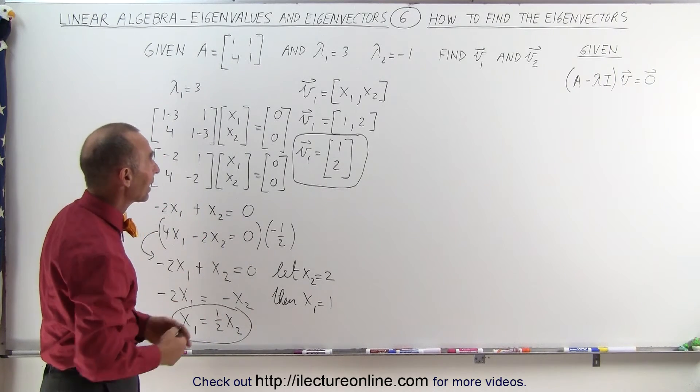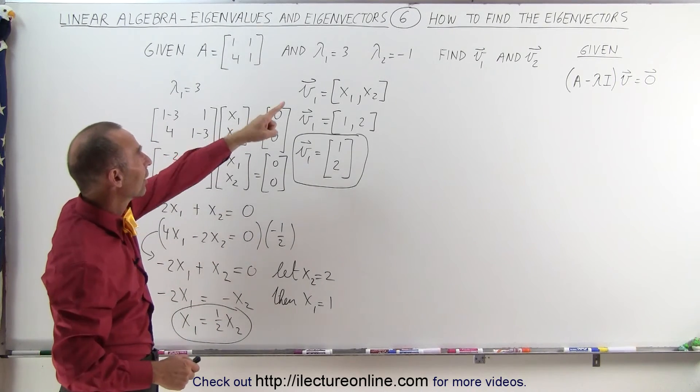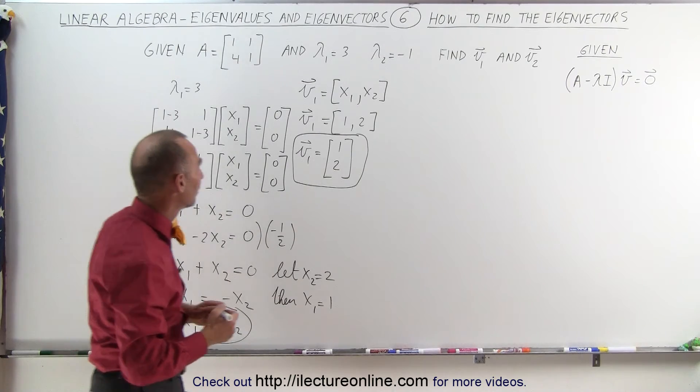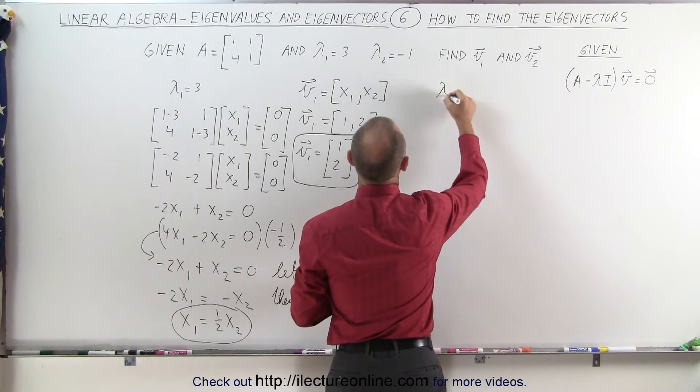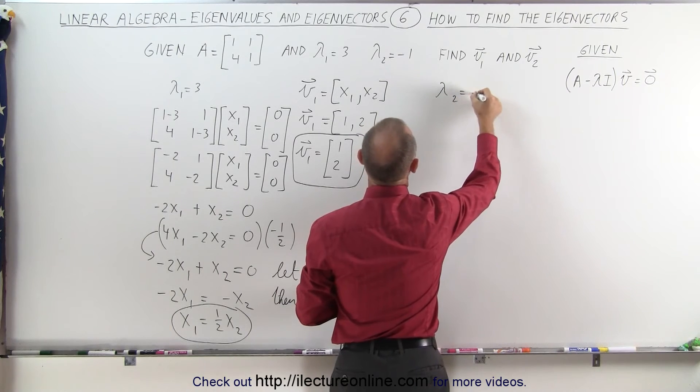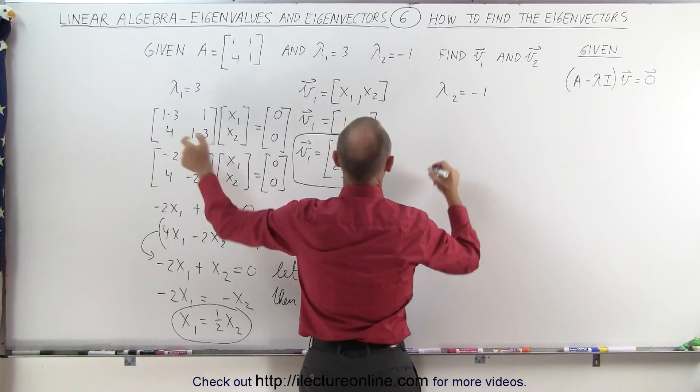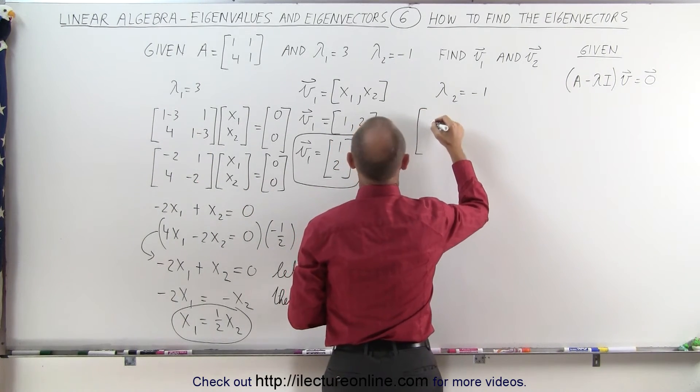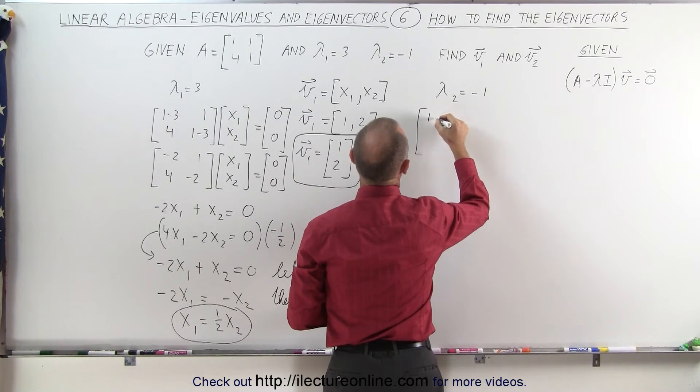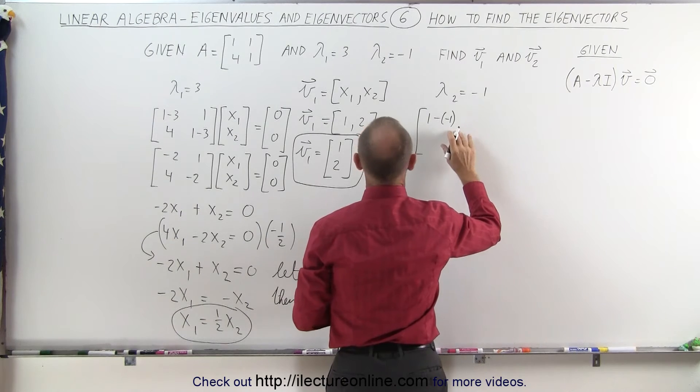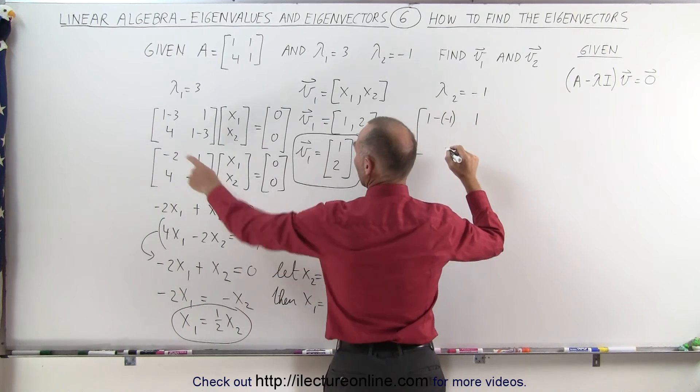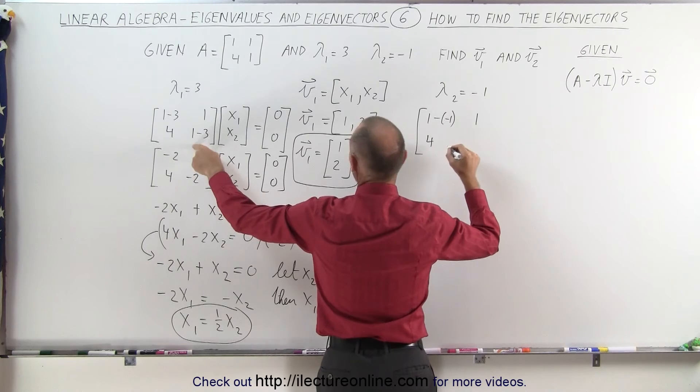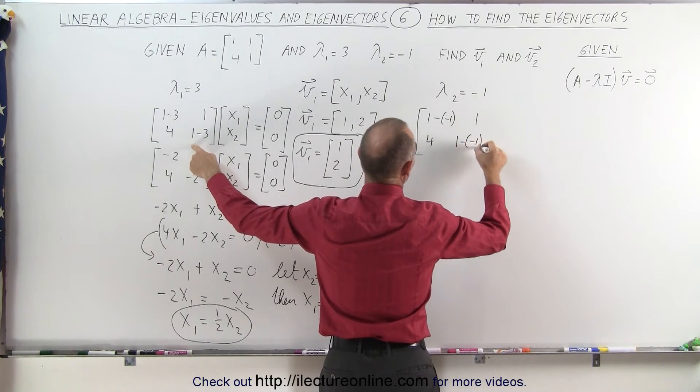What we are going to do here is show you how to find the second eigenvector with the different lambda, the different eigenvalue. So using lambda 2 equals negative 1, and I plug that in here, I get 1 minus a minus 1, I'll write it like this so you can see it, I have a 1 here, I have a 4 here, and I get 1 minus a minus 1.